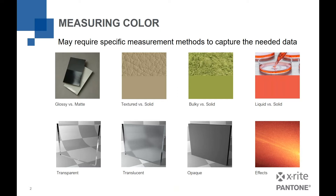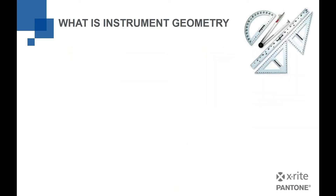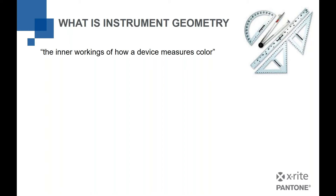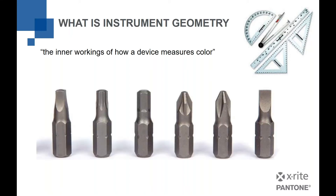When we talk about instruments and the type of instrument we're going to use, we're talking about something called geometry. When we talk about instrument geometry, we're literally talking about the inner workings of how a device measures color — where the light is located, where the sample is being seen by the instrument, where the measurement is being taken, and how that interprets color. And it's really about choosing the right tool.